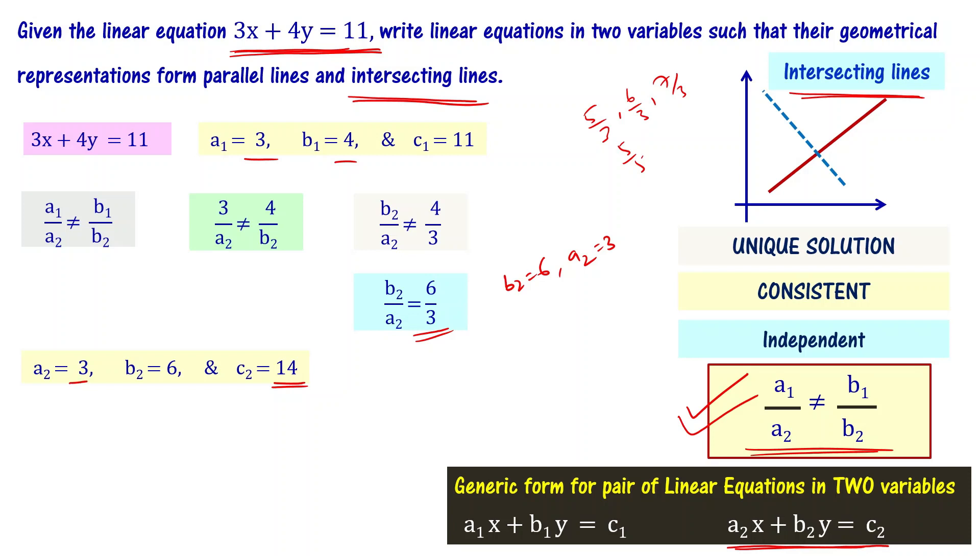With a2 equal to 3, b2 equal to 6, and c2 equal to 14, the equation is 3x plus 6y equal to 14. When you plot this equation with the original equation, you will get intersecting lines.